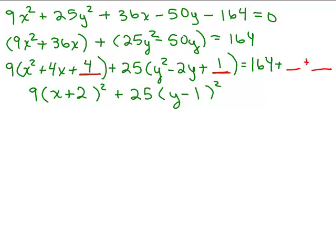So the tricky part like I mentioned is you're really, I'm going to put this in red, you're really adding a 9 times 4 to the left side of the equation so you have to add 36 and you're really adding a 25 times 1 which is 25. So we have to add 164, 36 plus 25 together and that's 225.